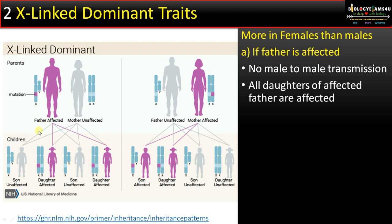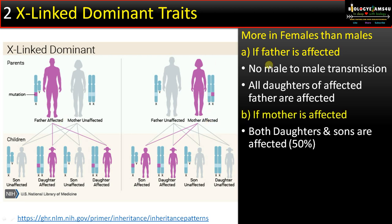There is no male-to-male transmission since the father gives only the Y chromosome to sons. In case two, if the mother is affected, both daughters and sons are affected with a 50% chance. As it is a dominant trait, this inheritance pattern doesn't skip generations.